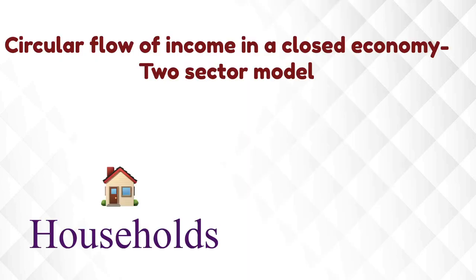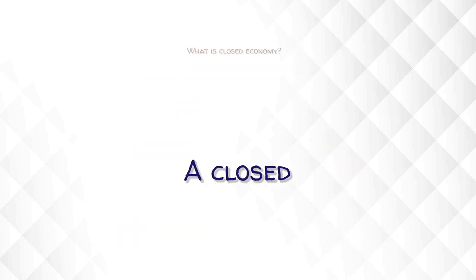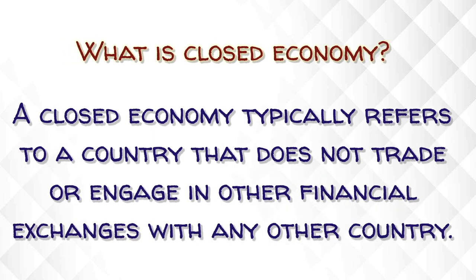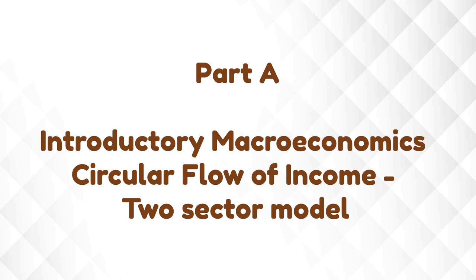A simple economy assumes that there exist only two sectors — household and firms. This is called the circular flow of income in a closed economy, two-sector model. A closed economy is a term used for an economy which has no transactions or flow of income with the rest of the world or foreign countries. Keeping your syllabus in mind, today we will be concentrating on the circular flow of income two-sector model only.